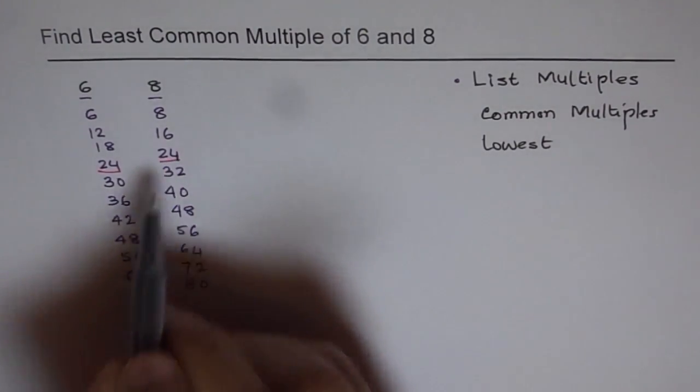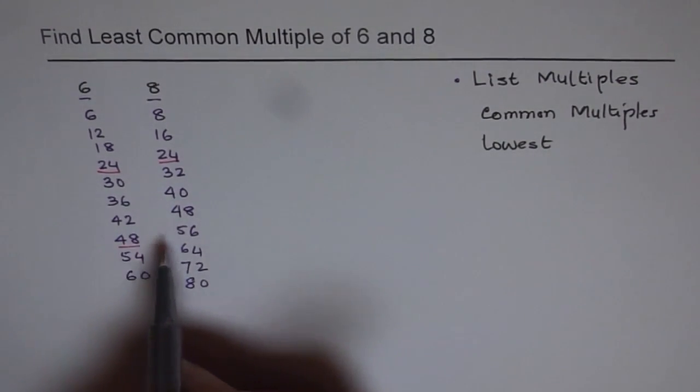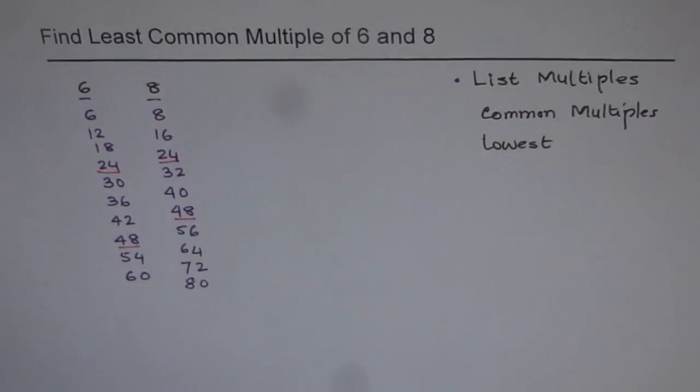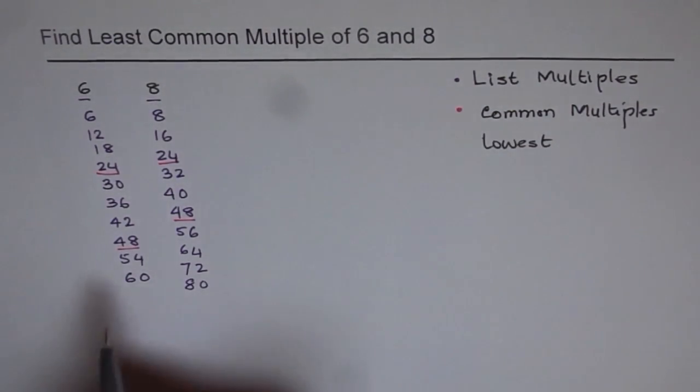So you can see 24 and 24 is common. And then as you go down the list, you find 48 and 48 is also common. So the common multiples, we have found the common multiples.